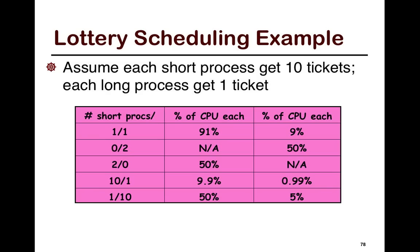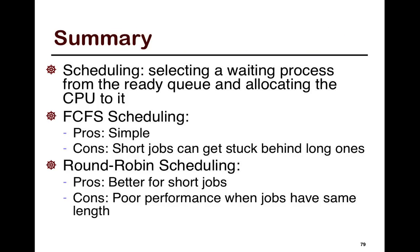I would encourage you to go take a look at the slides for this. To summarize: scheduling is the job of selecting a waiting process from a ready queue and allocating the CPU to it. It's important because, based on the policy and system characteristics, you can end up with dramatically different wait times and response times. The two main metrics we care about are wait time and response time, though there are others such as throughput.